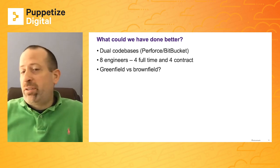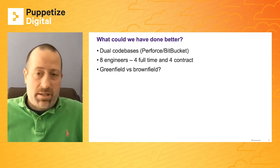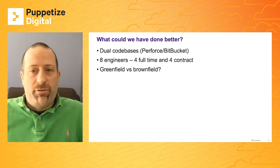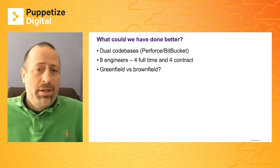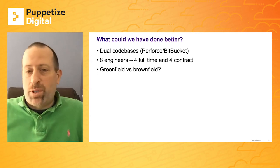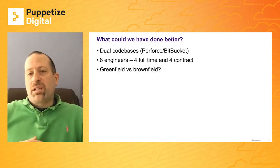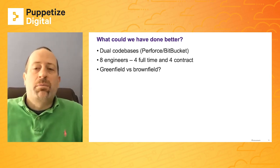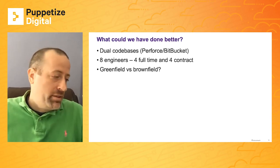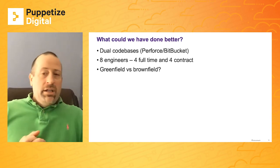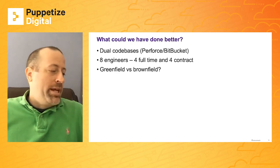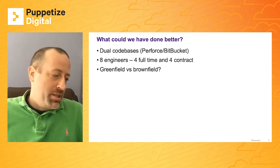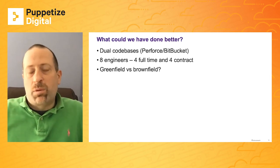This took a lot of resources away from other projects. At the start we had four full-time engineers and four contract engineers. There were a lot of discussions around greenfield and brownfield — did we make the right decision? As my manager says, he's not sure if we made the right decision, but we made it consciously and we're better for that.